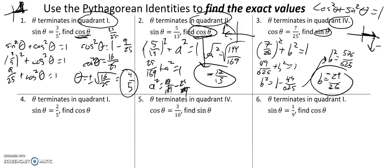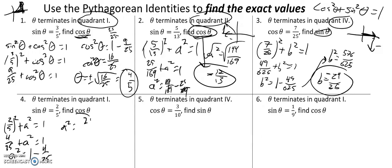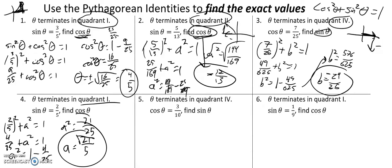Next one. Sine is two-fifths, cosine we don't know. Quadrant one, so they're both positive. Two-fifths squared plus cosine squared — I'll call it a — equals one. Two-fifths squared is four-twenty-fifths. A squared equals one minus four-twenty-fifths. One is twenty-five-twenty-fifths, so a squared equals twenty-one-twenty-fifths. If I square root, it's going to be positive because it's quadrant one. Square root of twenty-five is five, and square root of twenty-one stays as the square root of twenty-one. That's my exact answer.